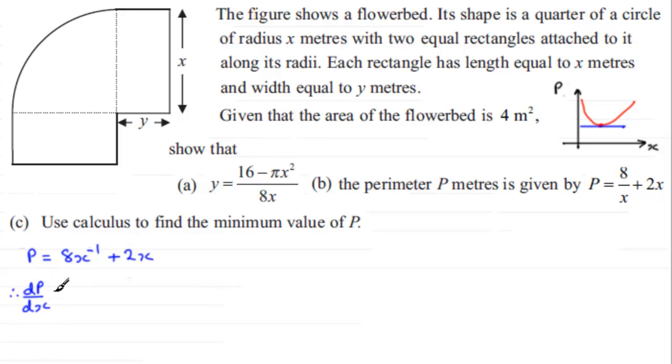So we've therefore got dp by dx equals, and in the usual way, we multiply the minus 1 with the 8 and get minus 8, subtract 1 from the power and you get x to the power minus 2. And for this second term, differentiating that, it just goes back to 2.